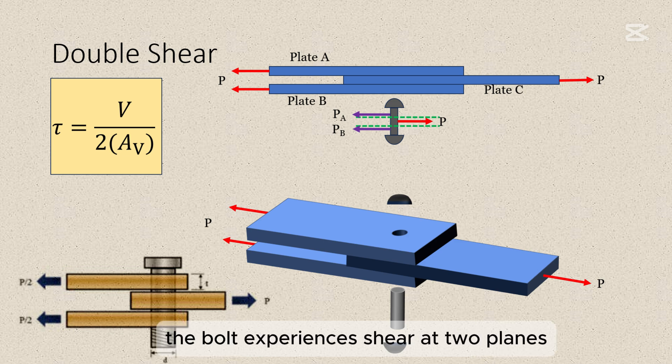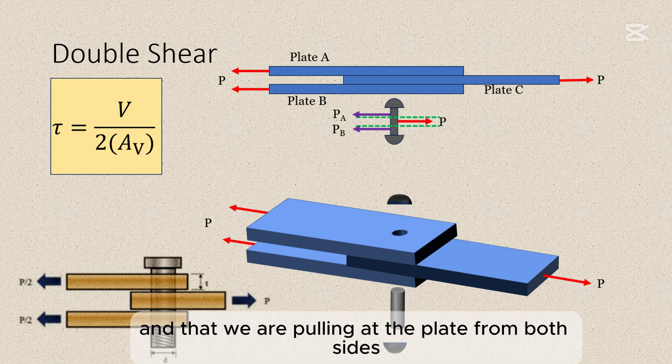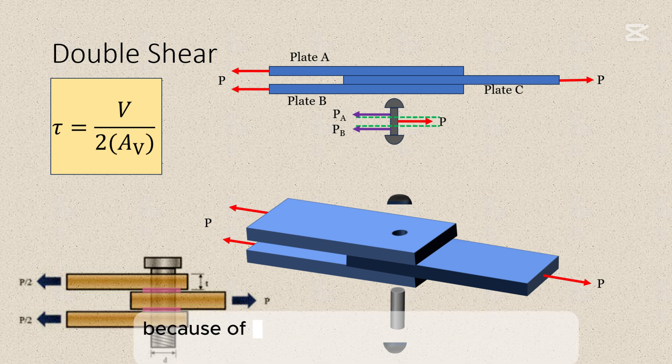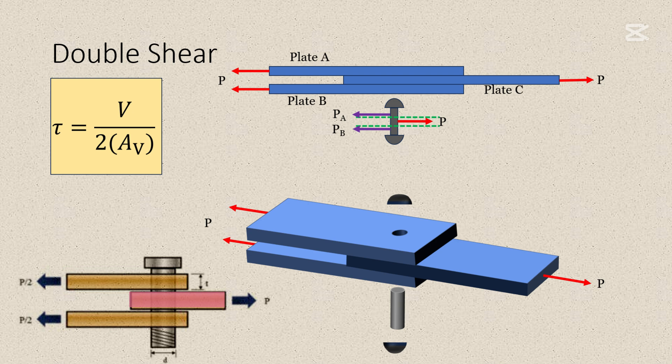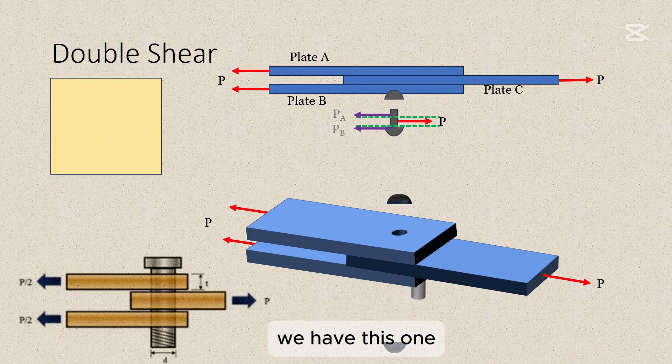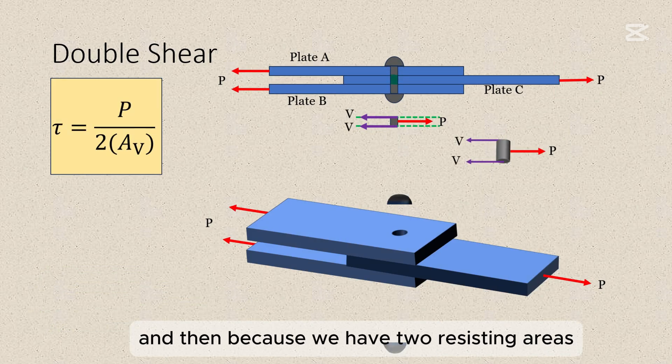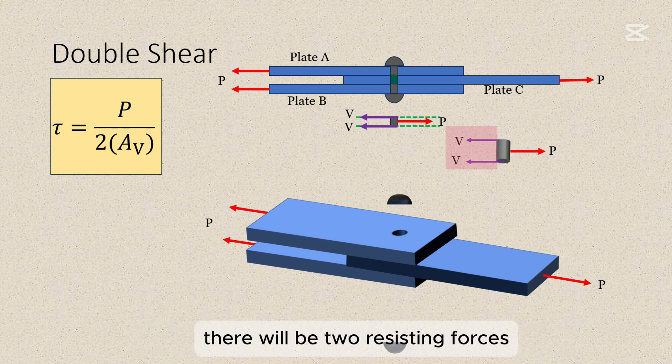Now since at the middle, the bolt experiences shear at two planes, let us try to analyze it. If we have a bolt right here, and we are pulling at the plate from both sides, then these two will be the portion that will be subjected to shear, because they will have the tendency to slide past each other because of this plate, which tends to tear this apart. And so we'll consider the middle, and then isolating that cut, we have this one.